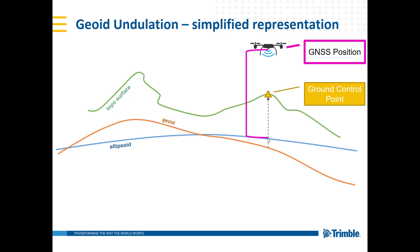When we define a coordinate system in a project — we call it the target coordinate system — we should normally define it with a geoid, because ground control points are typically in relation to the geoid. When we bring in the drone data, which is in relation to ellipsoidal height, we can then transform it to our geoid height because we have the information about the undulation.